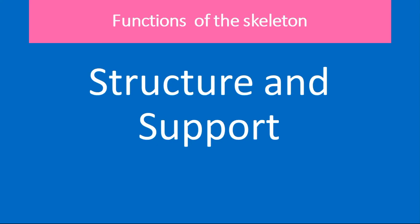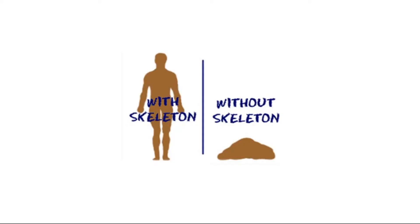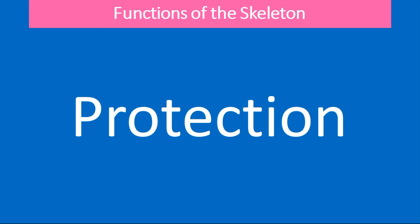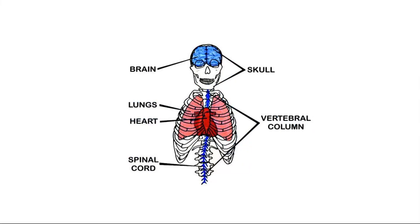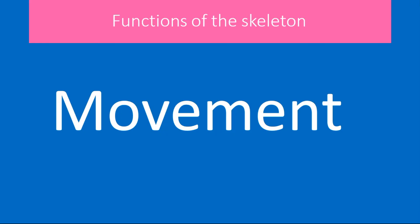The skeleton provides several functions for the body. The first function is structure and support — without our skeleton to support the body we would just be a simple blob. The second function is protection. The skeleton protects the vital organs of the body. For example, the skull protects the brain, the vertebral column protects our spinal cord, and the ribs protect our heart and lungs.